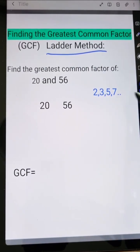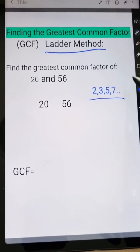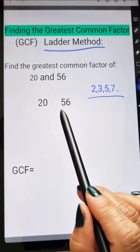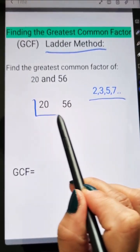You notice I have numbers here, and these are the first four prime numbers that I can use as divisor. I'm going to write 20 and 56 like this, and then I'm going to make a line.